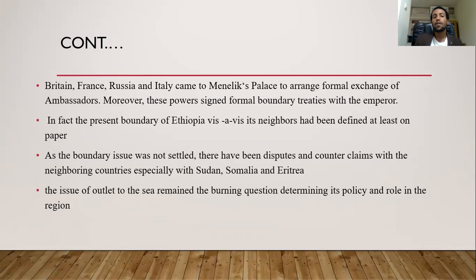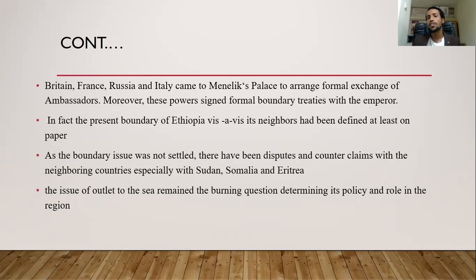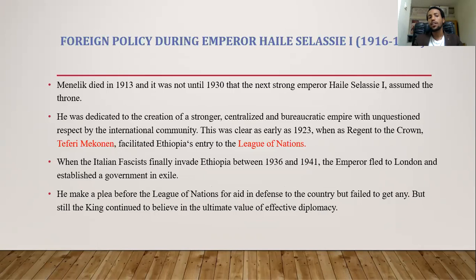Because the boundary issue was not fully settled, there have been disputes and counterclaims with neighboring countries. After those countries gained independence, Somalia claimed Ogaden as their territory, Eritrea claimed Badme, and Sudan claimed some western parts around Humera. This became a big issue even at the present time. The issue of access to the sea remains the main burning question — Ethiopia lost sea access after the Italians conquered Eritrea, and the issue of ports remains a major problem to this day.